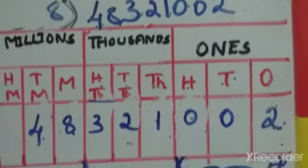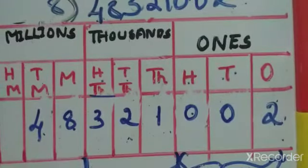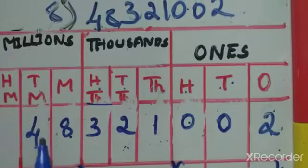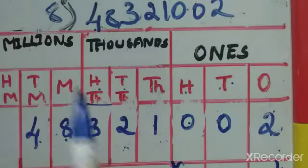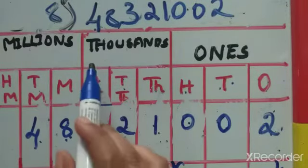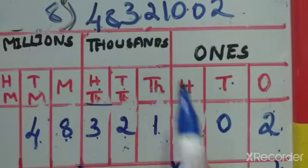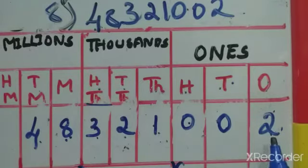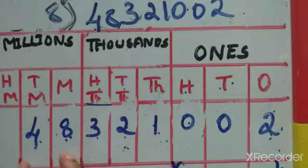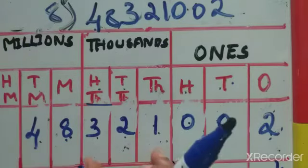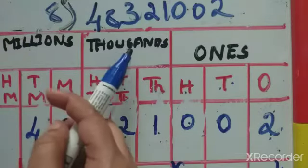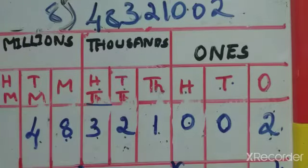Now how to read this number. Looking at the millions group: 48 million. In the thousands group: 321 thousand. And in the ones group: 2. So we read it as 48 million, 321 thousand, and 2.